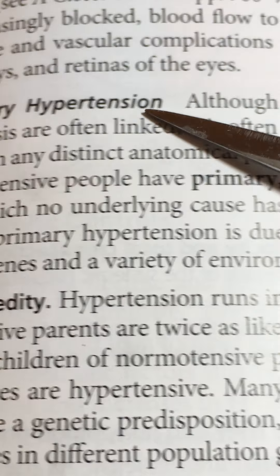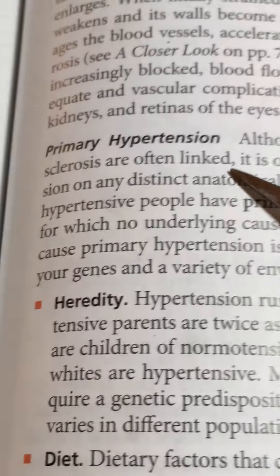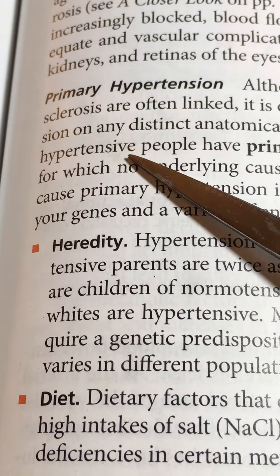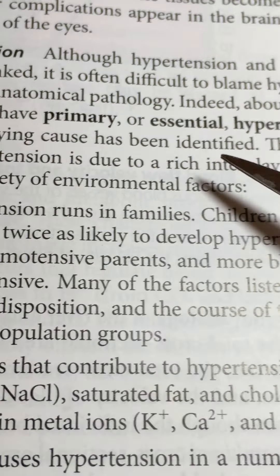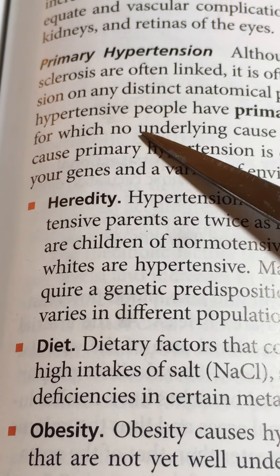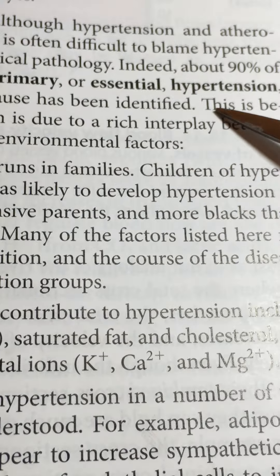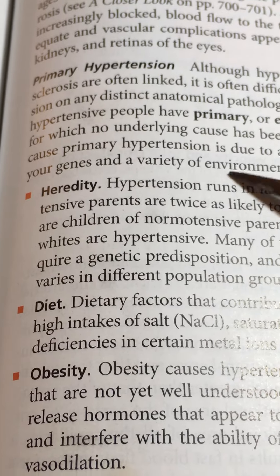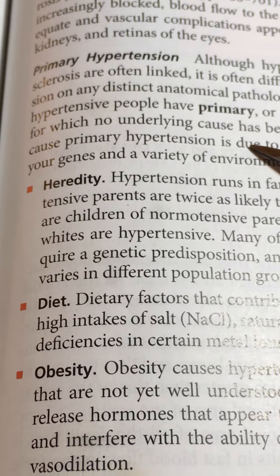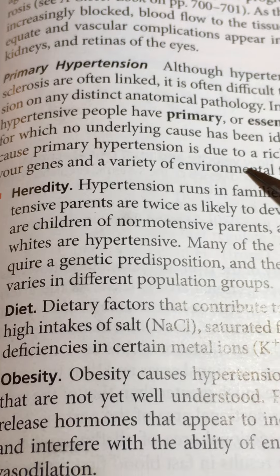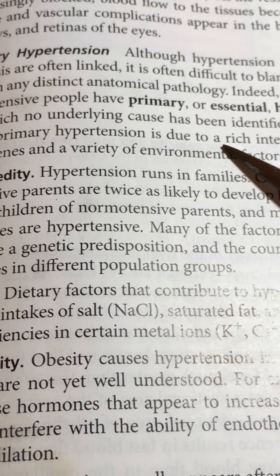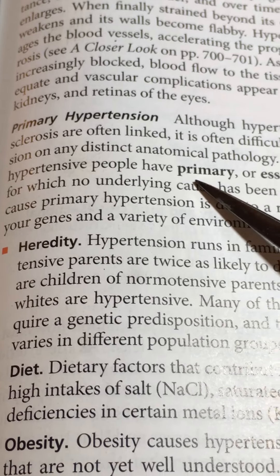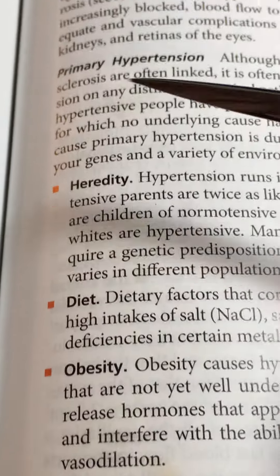Although hypertension and atherosclerosis are often linked, it's difficult to blame hypertension on any single distinct anatomical pathology. About 90 percent of hypertensive people have primary or essential hypertension. This can be misleading, because many things lead to hypertension. What the textbook is saying is that in most people, one cannot point to a single cause. We'll be discussing metabolic syndrome, which has at least four or five characteristics identified as part of the problem.